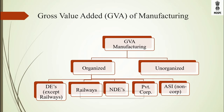We now begin estimating GVA of manufacturing industry. Various manufacturing enterprises are broadly classified into two categories: organised sector and unorganised sector. The organised sector is further divided into departmental enterprises, non-departmental enterprises, private corporate, and ASI non-corporate. Within departmental enterprises, railways is separately measured. All India GVA will be estimated for each institution and then allocated to states, along with compilation category-wise GVA.